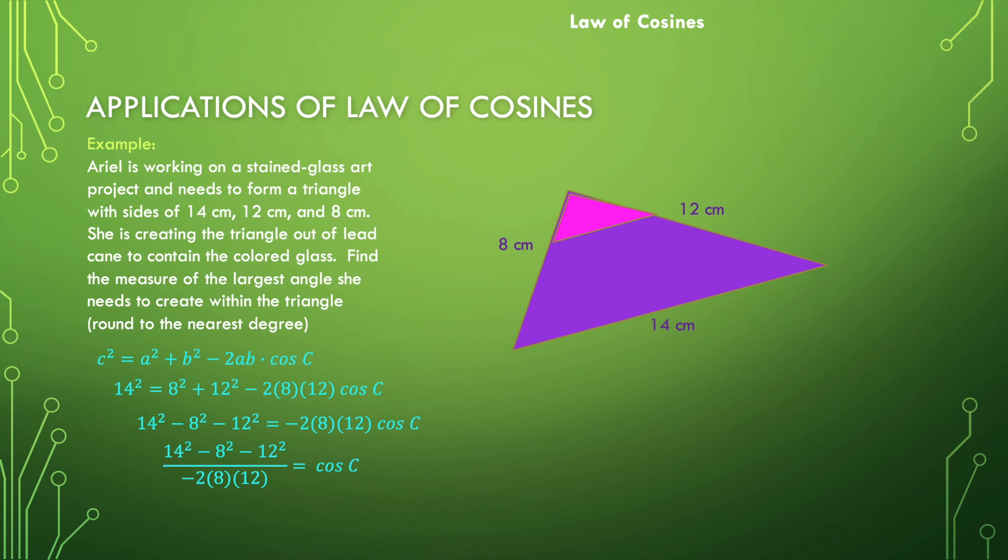We're not really interested in the cosine of c, we're interested in c. So in order to find c, we would isolate it by taking the cosine inverse. The cosine inverse of that whole expression is going to equal c. Now it's just a matter of using our calculator to find what this is equal to. When we do that, we're going to find that c is about 86 degrees.